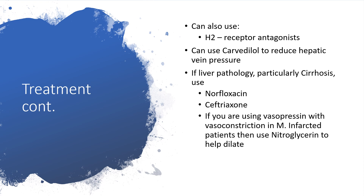You can also use H2 receptor antagonists. You can use carvedilol to reduce hepatic vein pressure. If there is liver pathology — for example, liver cirrhosis — you can use ciprofloxacin or ceftriaxone. And if you are using vasopressin with vasoconstriction causing myocardial issues, please use nitroglycerin to help dilate. The reason for antibiotics — ciprofloxacin and ceftriaxone — is because liver cirrhosis predisposes to spontaneous bacterial peritonitis, and having antibiotics ready will help.